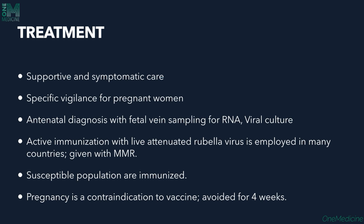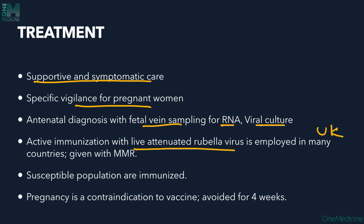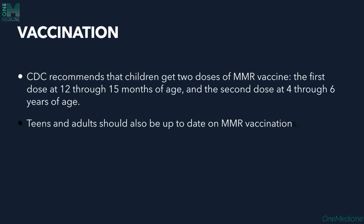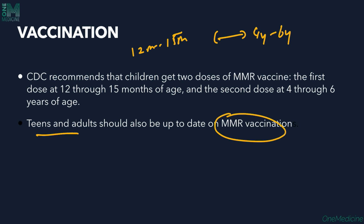Treatment is supportive and symptomatic care. Specific vigilance for pregnant women is important, and antenatal diagnosis with fetal vein sampling for RNA viral culture is available. Active immunization with live attenuated virus is practiced in some countries, especially the UK, given as MMR vaccine. In pregnancy, vaccination should not be given and should be avoided for at least four weeks. The CDC recommends two doses: one between 12 to 15 months of age, and another between 4 to 6 years of age. Teens and adults should also be up to date on MMR vaccination.